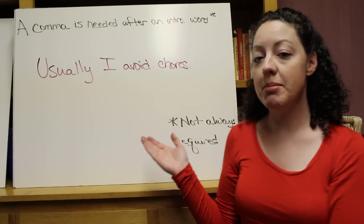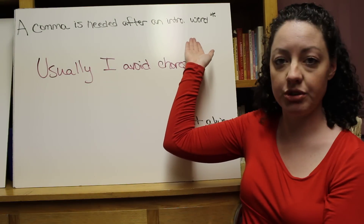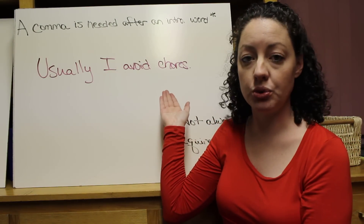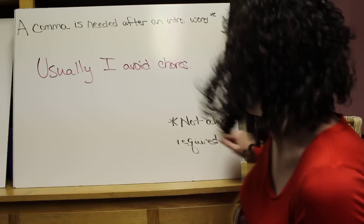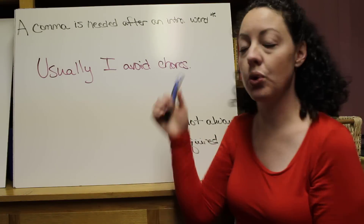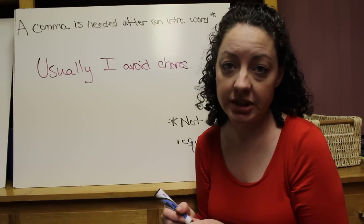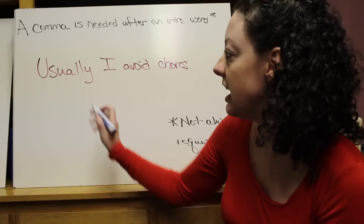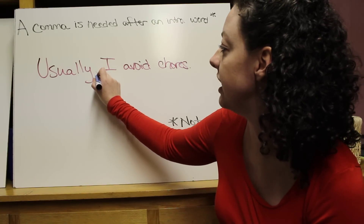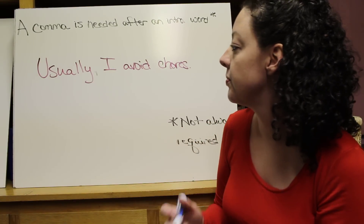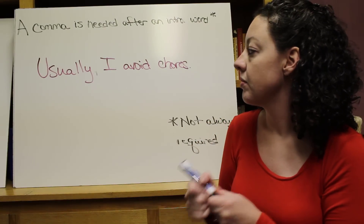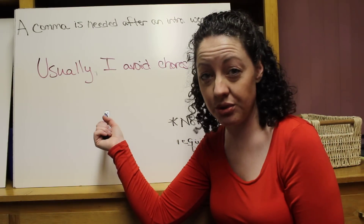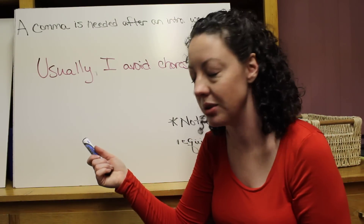A comma is needed after an introductory word. For example: 'Usually, I avoid chores.' 'I avoid chores' is a complete sentence. 'Usually' adds extra meaning, so we're going to need our comma right here. 'Usually' might mean I usually avoid chores, but sometimes I'll go ahead and do them.